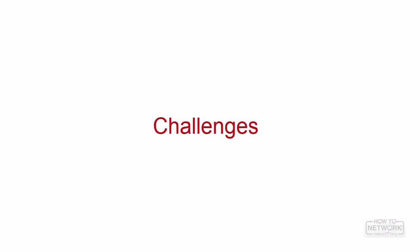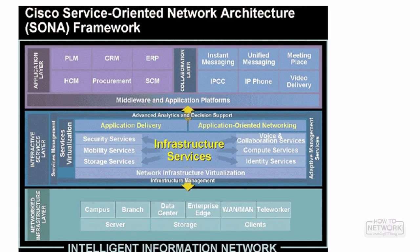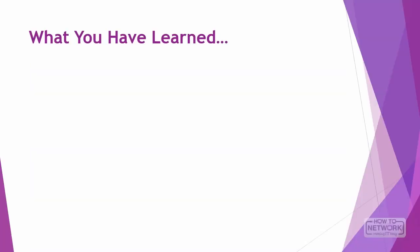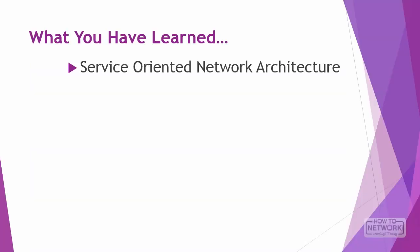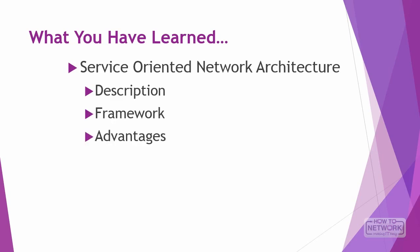On a piece of paper, draw out the Cisco Service Oriented Network Architecture framework to the best of your ability, including modules within your layers. After reviewing, you should see the Network Infrastructure Layer with its modules, the Interactive Services Layer with its sub-modules, and the Application Layer with its sub-modules. You've learned about Service Oriented Network Architecture — a high-level description, the framework itself, and the advantages of using this architecture in the enterprise. Good luck in your studies.